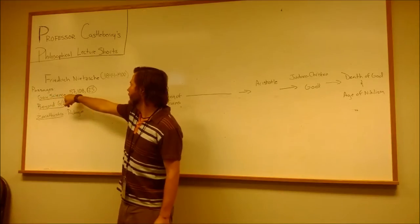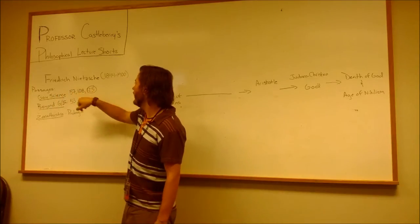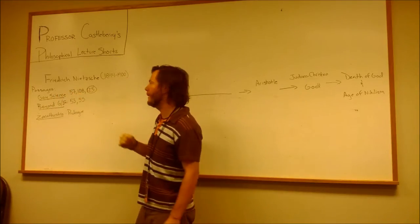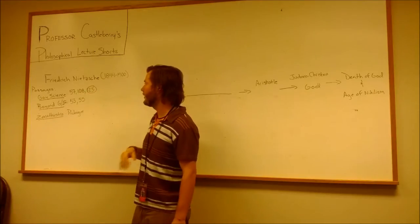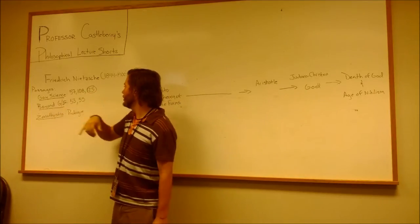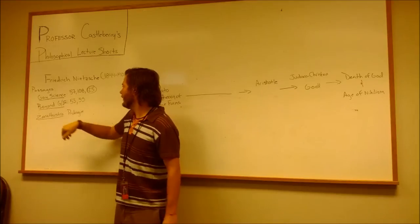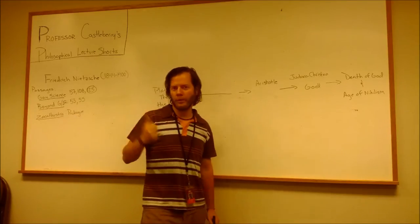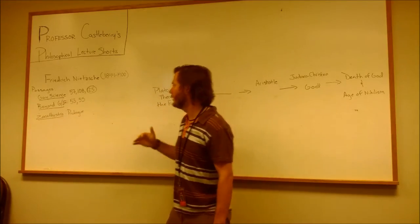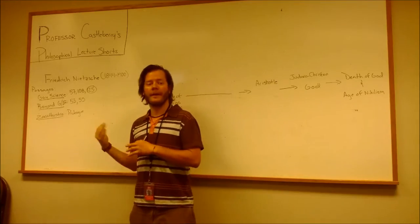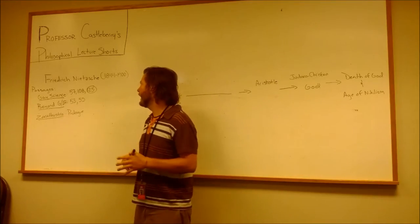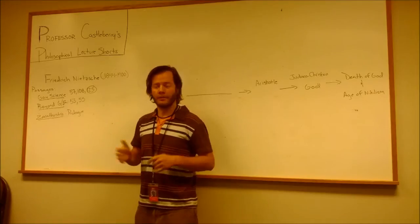In the Gay Science, we are concentrating on passage 57, 108, and especially 125, which is the Madman—one of the most important passages in all of Nietzsche. And Beyond Good and Evil, 53 and 55, and then the prologue I gave you will be really important when we talk about the Ubermensch in the next video. All the stuff I gave you is important to what we're talking about, and I'm just trying to give you an idea of what Nietzsche is saying throughout all his books.